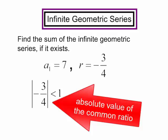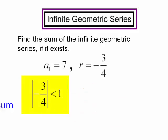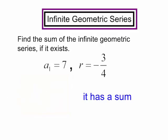Well, the absolute value of negative 3 fourths is 3 fourths. It is less than 1. It has a sum. Let's find that sum.